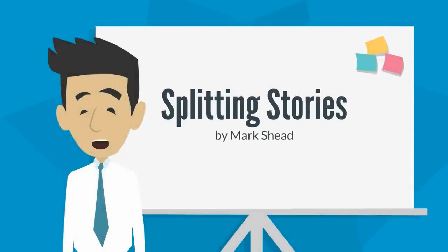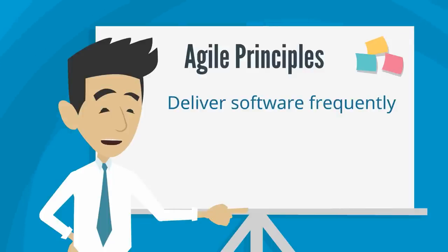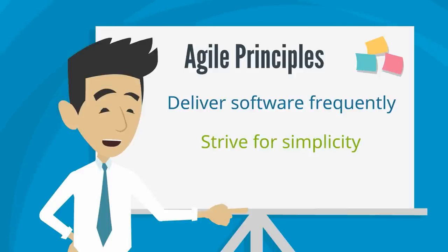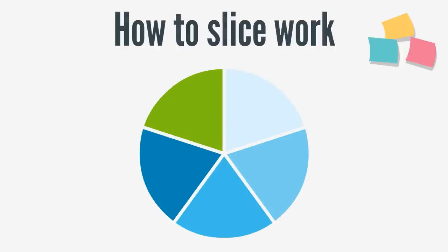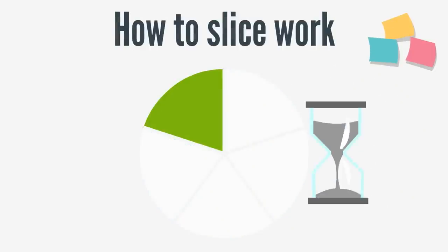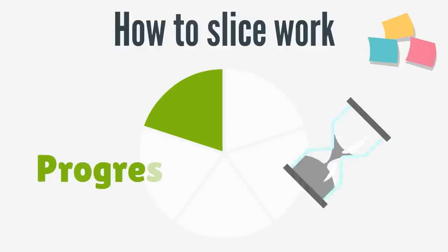Hello, I'm Mark. I help organizations write software more efficiently. The Agile principles say that we should try to deliver software to the user frequently, and that we need to do our best to strive for simplicity and only build what is necessary and important. Both of these things require a great deal of skill and practice in the way we organize our work. In this video, we're going to talk about how to slice our work into valuable user stories that are small enough they can be completed in a reasonable amount of time while still being valuable enough that they represent progress to the user.